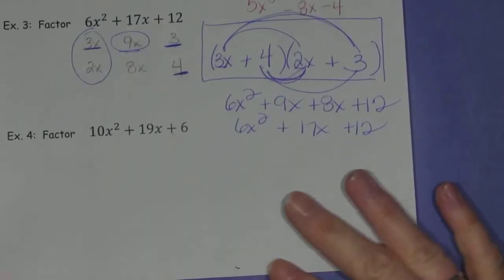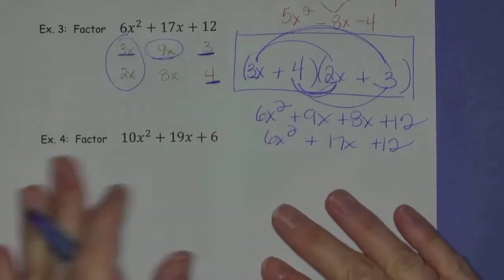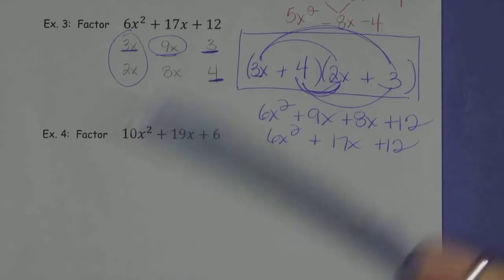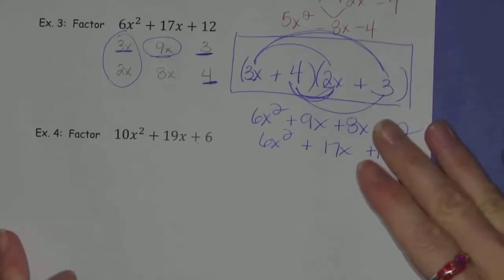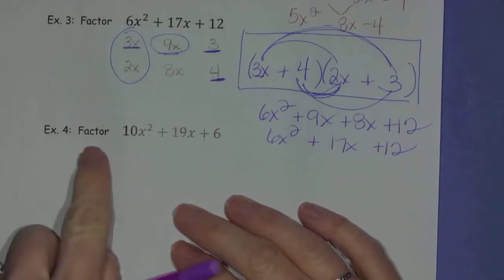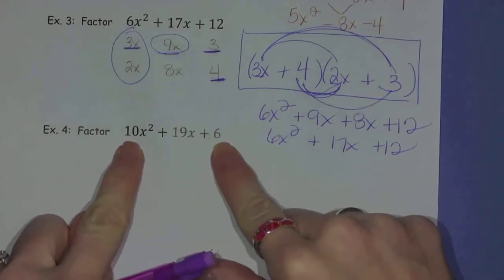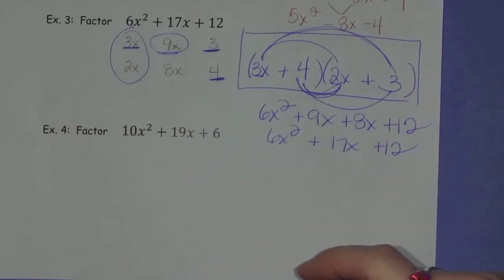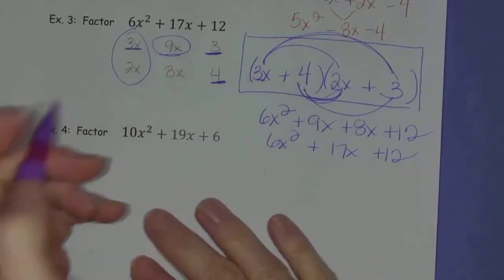At any time, you know, feel free to pause this and try it. And then you can see me do it and see if we got the same answer. Okay. 10x squared plus 19x plus 6. Again, 10 and 6 are not prime numbers. So I'm using a pencil because you saw I messed up twice up above.